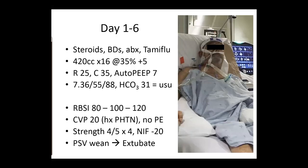Days one through six, everything goes according to plan. The patient had already started appropriate treatment in the ED, including steroids and bronchodilators. He's placed on mechanical ventilation at 420 cc tidal volume, rate of 16, FiO2 of 35%, and PEEP of 5. With these settings, resistance is 25, compliance is 35, and the patient has an auto-PEEP of 7.